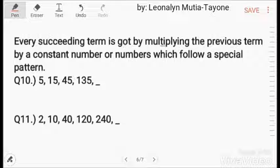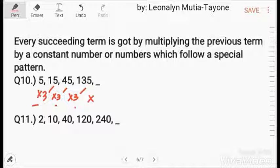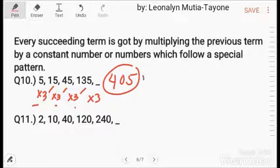Next, every succeeding term is got by multiplying the previous term by a constant number or numbers which follow a special pattern. Number 10, this is 5 times 3 plus 15. 15 times 3 equals 45 and 45 times 3 equals 135. So, the pattern is multiplied by 3. So, 135 times 3 equals 405. The answer is 405.